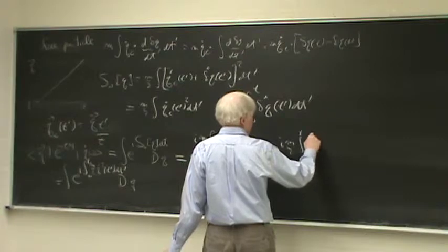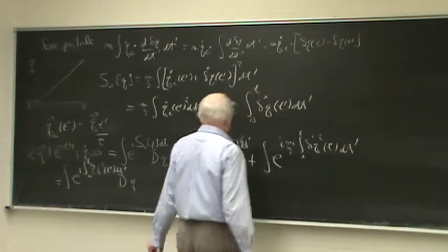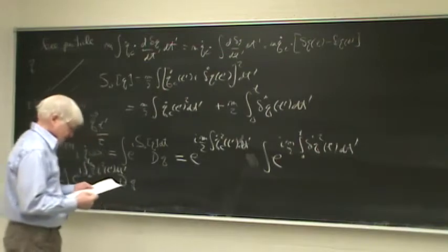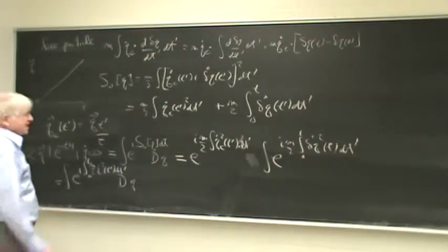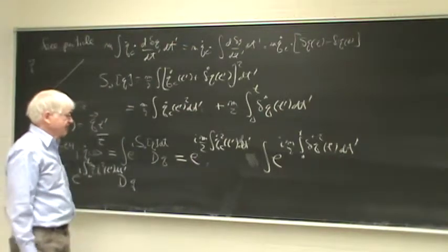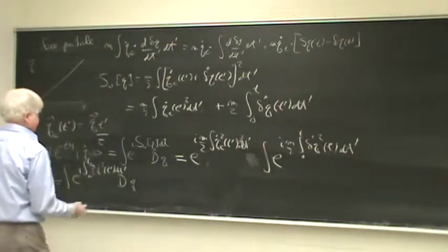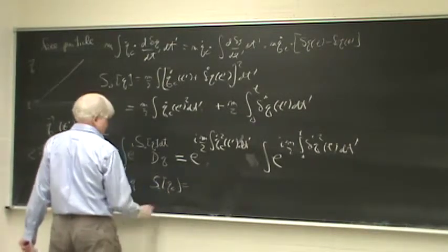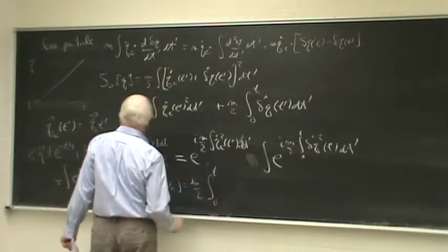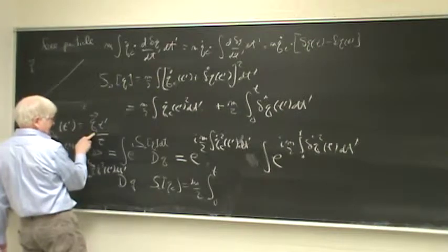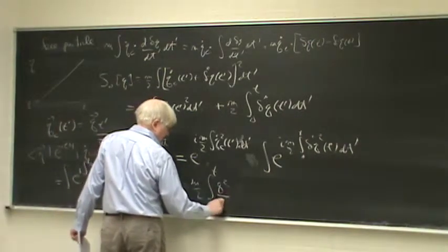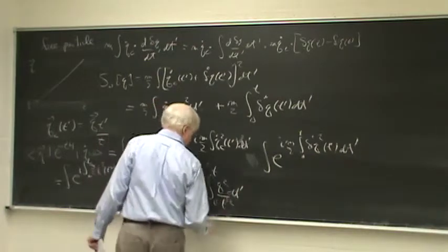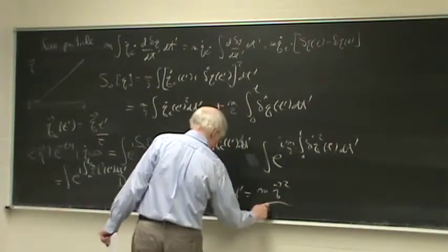So if we substitute that in, what we see is that the classical part is just a number: e^{i(m/2) ∫ q̇_classical² dt'}. And then what remains is a path integral, which is e^{i(m/2) ∫₀ᵗ δq̇²(t') dt'} times d(δq). The classical action S₀[q_classical] = (m/2) ∫₀ᵗ q̇_classical² dt', and since q̇_classical = q_vector/t, we get q̇_classical² = q²/t², so the classical action is m q_vector²/(2t).